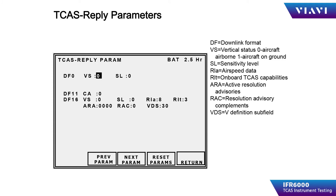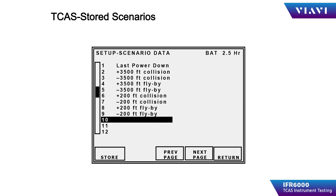The TCAS reply parameters page affords the operator the opportunity to set some of the reply parameters related to the acquisition and operational status of the target being generated. Some of these parameters are vertical status, capabilities, sensitivity levels, etc. The operator can choose to configure the parameters manually or can select from one of the canned scenarios provided with the IFR 6000.